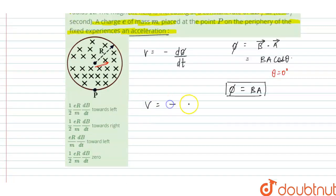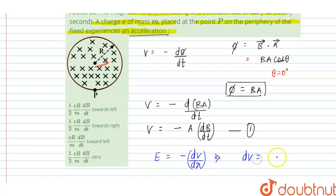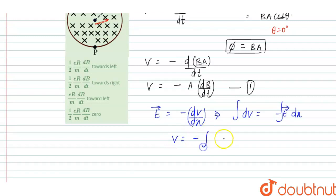Then EMF V equals minus of d(B·A)/dt. Since the area is constant, this becomes V = minus A·dB/dt. Let us call this equation number 1. We also know that the electric field can be written as E = minus dV/dx.